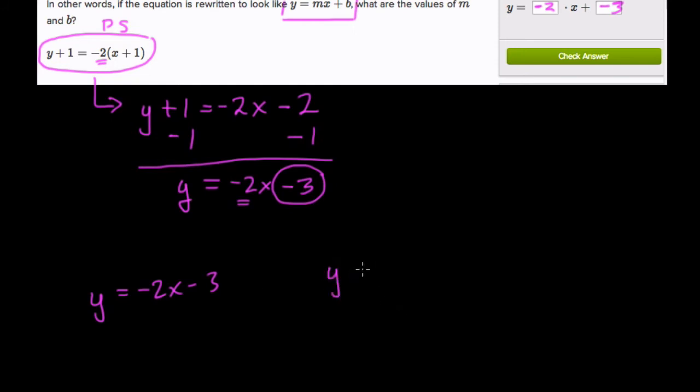is the difference of the y values, right? So y minus something equals m, your slope, times x minus something. Okay, so here, how can we do that?